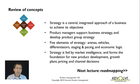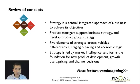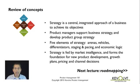Let's review the concepts of this lecture. Strategy is a central integrated approach of a business to achieve its objectives. Product managers support the creation of an overall business strategy and help develop and lead a product group strategy. There are five elements of strategy: the arenas, the vehicles, the differentiators, the staging and pacing, and economic logic. Strategy is fed by the market intelligence work product managers do, and it forms the foundation for product management work around new product development, growth plans, pricing, and obsolescence. That's it for strategy — our next lecture is on road mapping, and I look forward to talking to you then.